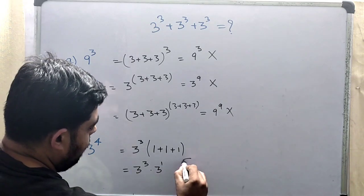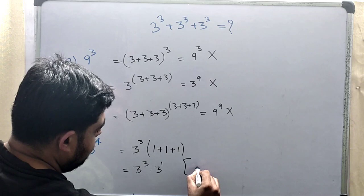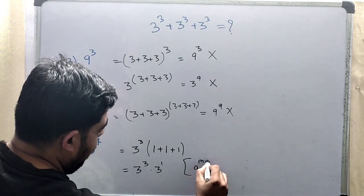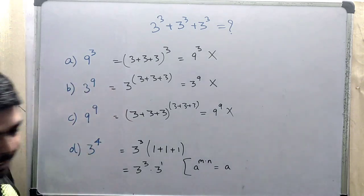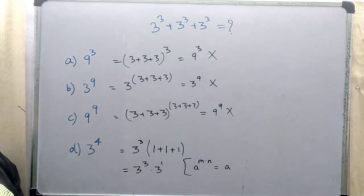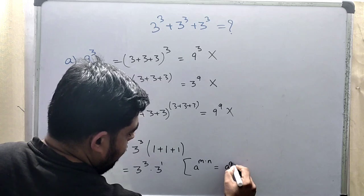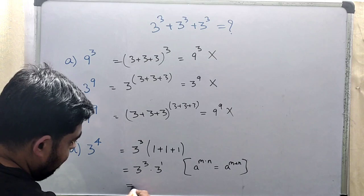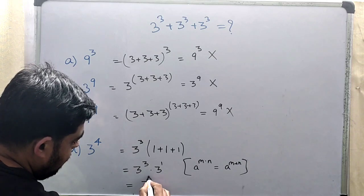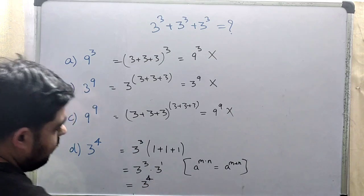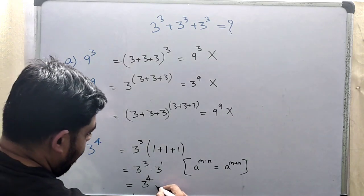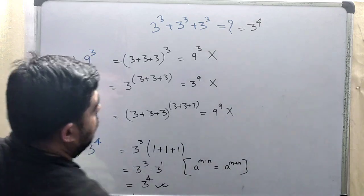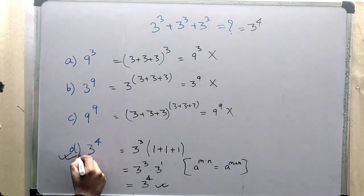So this will come from our exponential equation. The rule is: a to the power m multiplied by a to the power n equals a to the power m plus n. Our base is the same, so we add the powers. Our answer is 3 to the power 4, option number D.